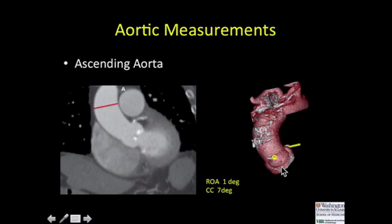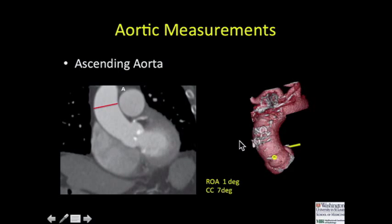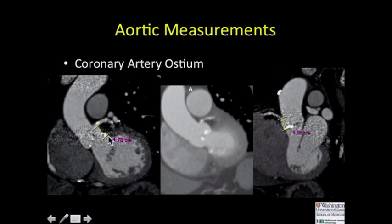Our cardiologists also like us to provide a 3D representation of the valve planes or valvular leaflets in the same plane, simulating what would be seen on cardiac cath — with the right cusp, left cusp, and non-coronary cusp in plane. That provides measurements that serve as a starting point for positioning the device. We also provide measurements from the valvular leaflet attachment to the coronary ostia for both right and left coronary arteries, ideally greater than 15 millimeters so they're not covered by the device.